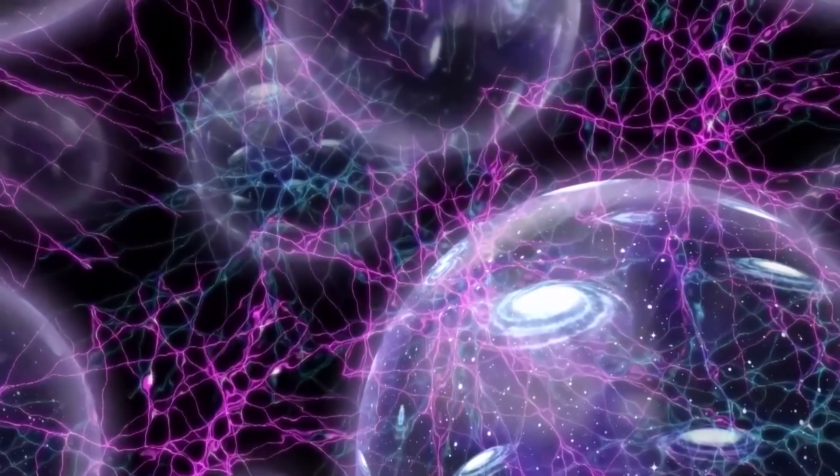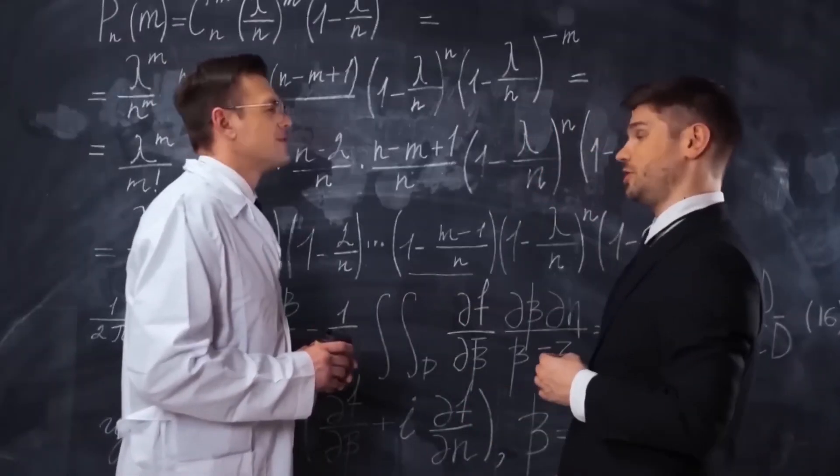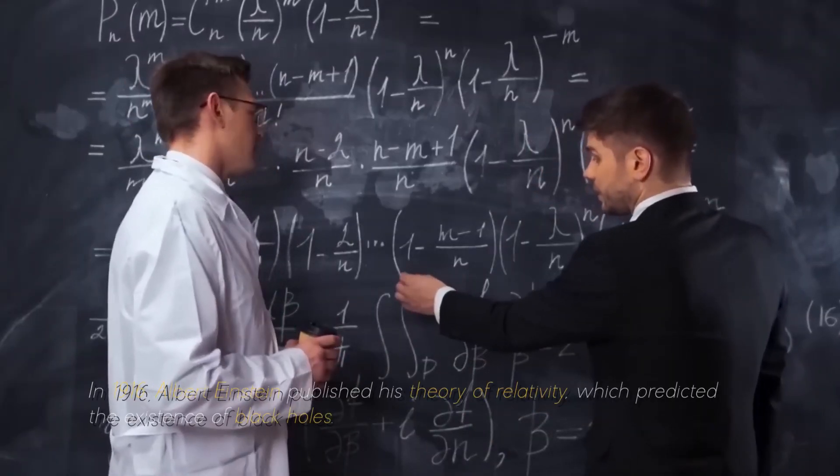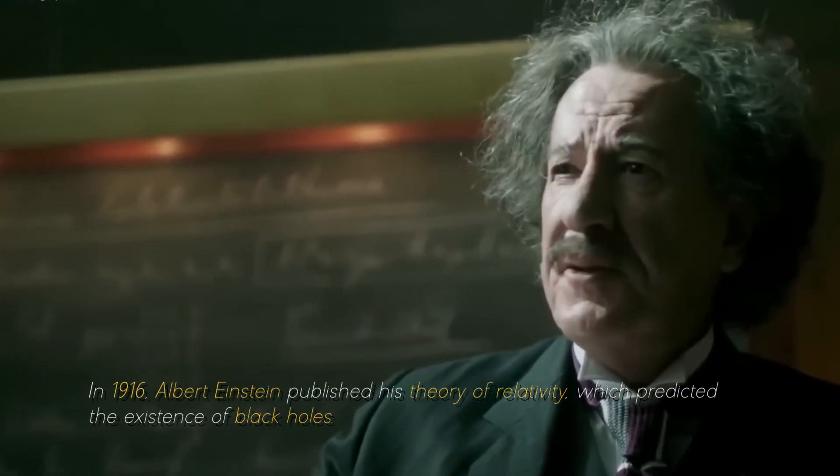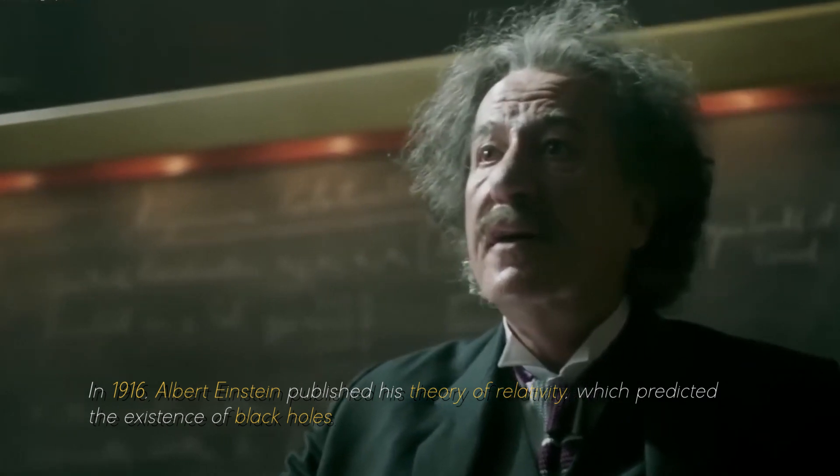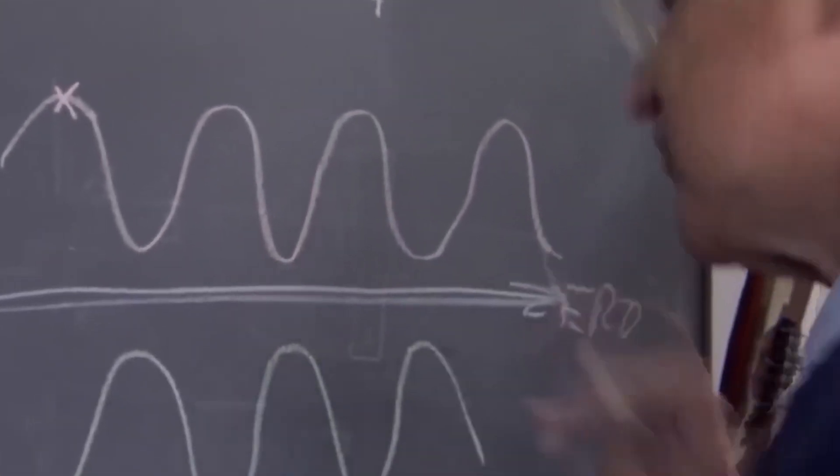Although many of us have a general idea of what black holes are, there are still some gaps in our knowledge. In 1916, Albert Einstein published his theory of relativity, which predicted the existence of black holes. At that time, the concept of black holes was purely theoretical.